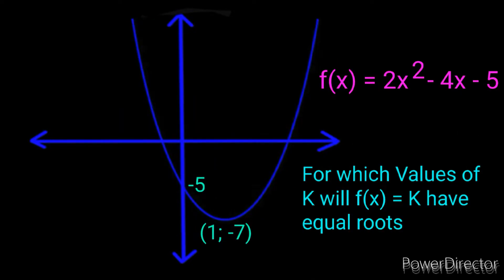Here is the first question. It is just like nature of roots. They give you the equation of f, with a y-intercept of negative 5 and a turning point of (1, -7). They ask: for which values of k will f(x) equals k have equal roots? Let me give you an understanding of equal roots, then we'll proceed to the question.